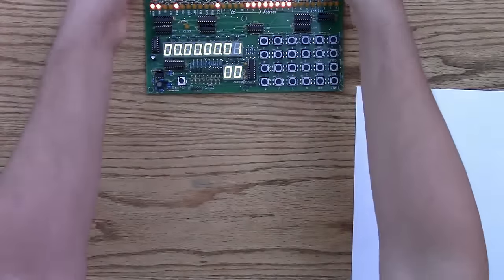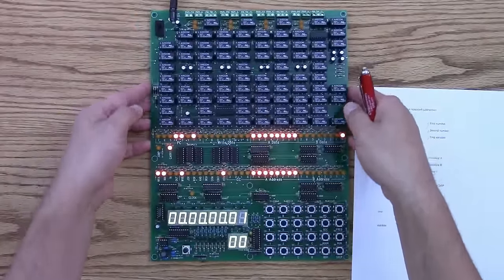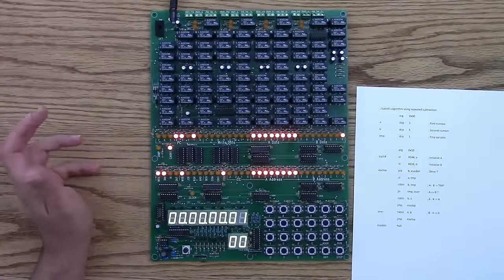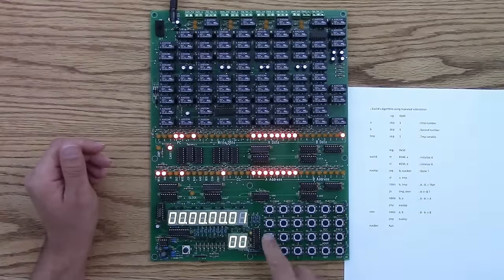Now we can modify the built-in program and have it try to find a simpler greatest common divisor. So let's try 50 and 100. So the program starts at address 10, so let's go to 10.